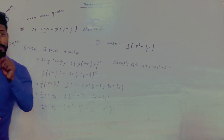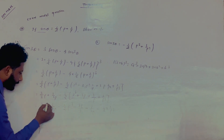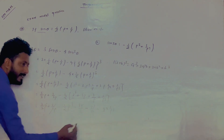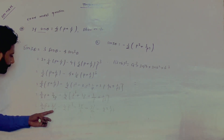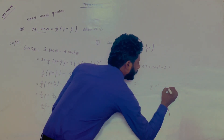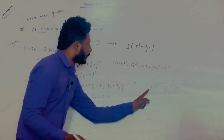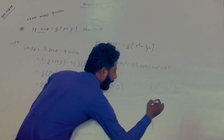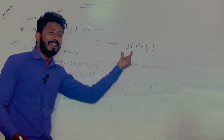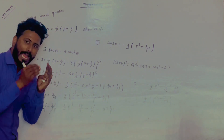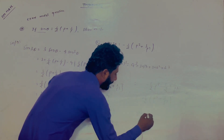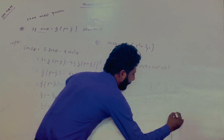Like terms cancel: 3 by 2p and minus 3 by 2p cancel out. What remains — taking common factor minus 1 by 2: minus 1 by 2 into p cubed plus 1 by p cubed. So sin 3 theta equals minus 1 by 2, p cubed plus 1 by p cubed — proved.